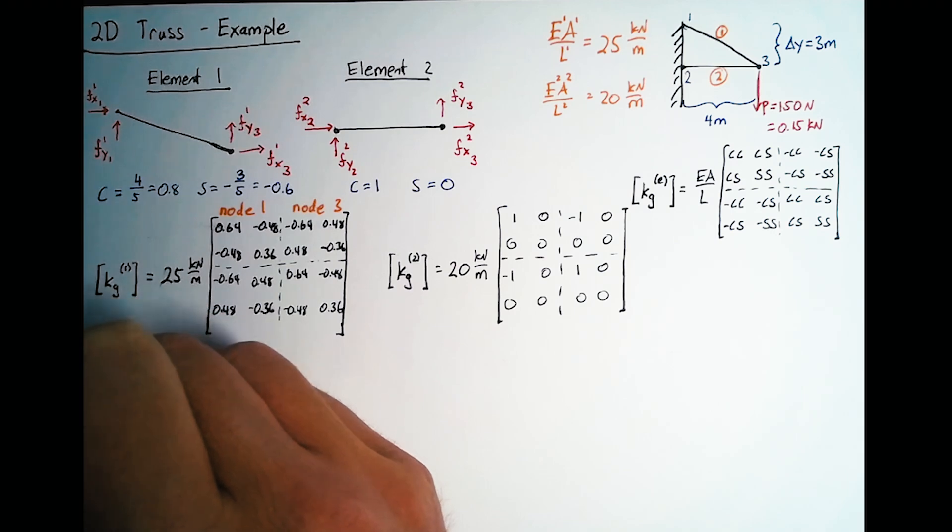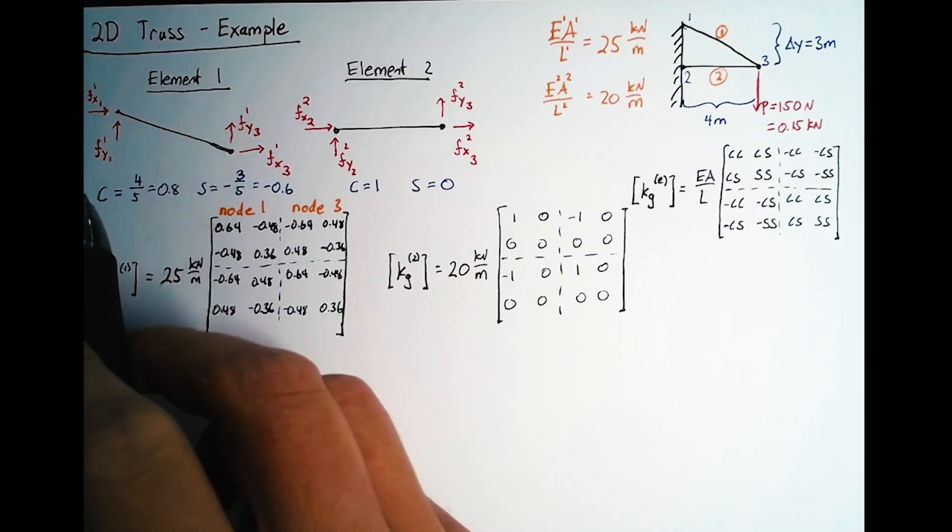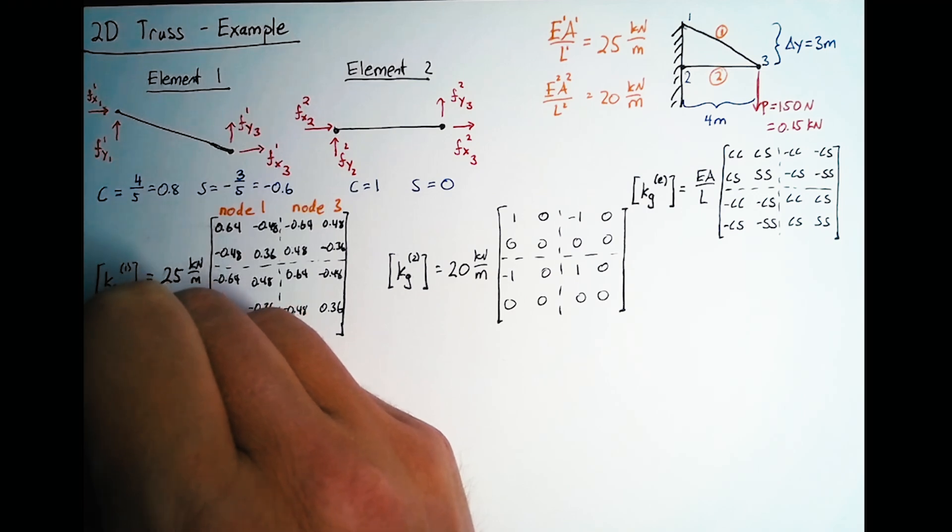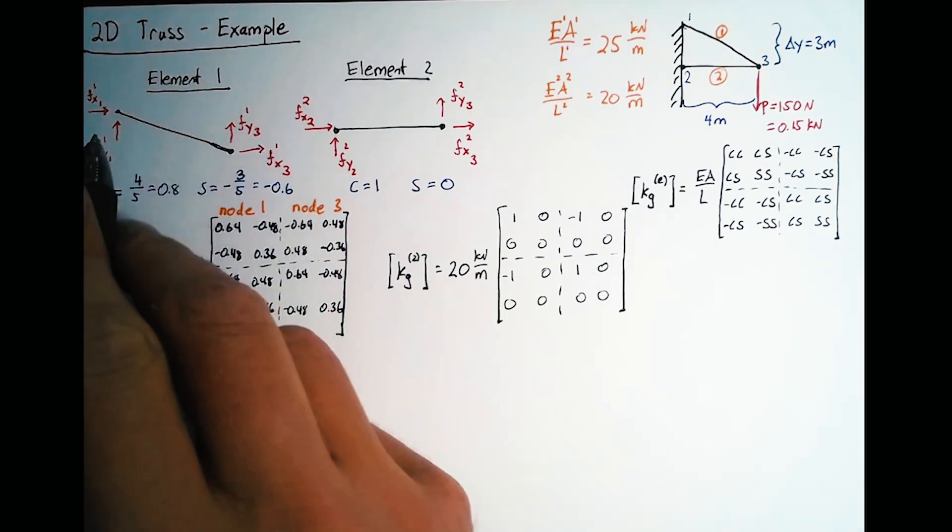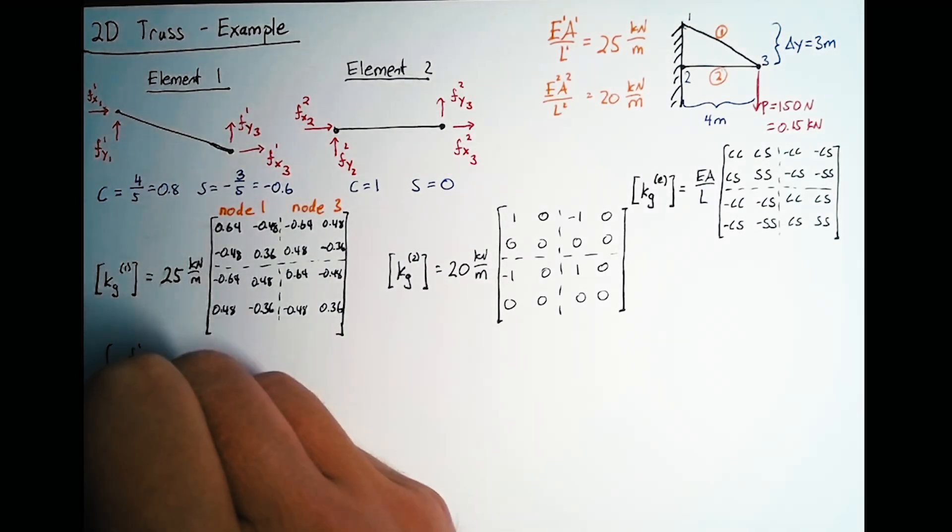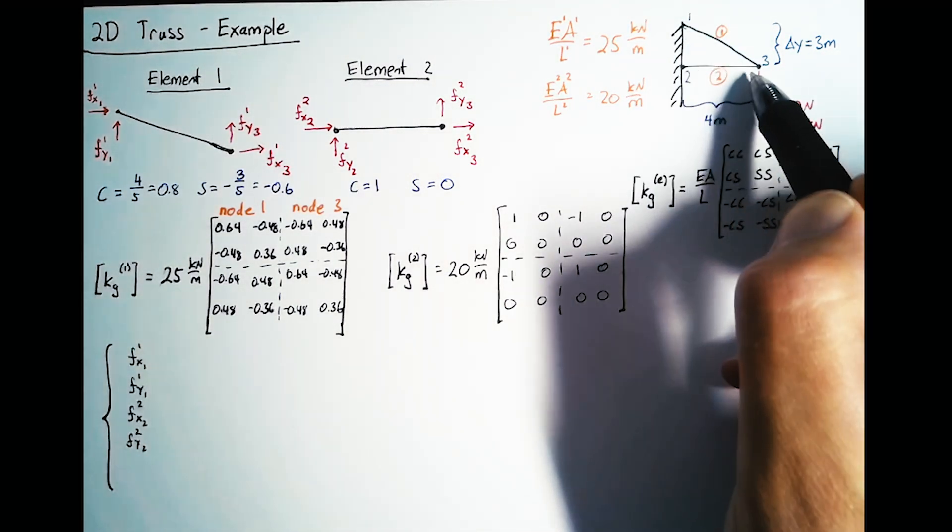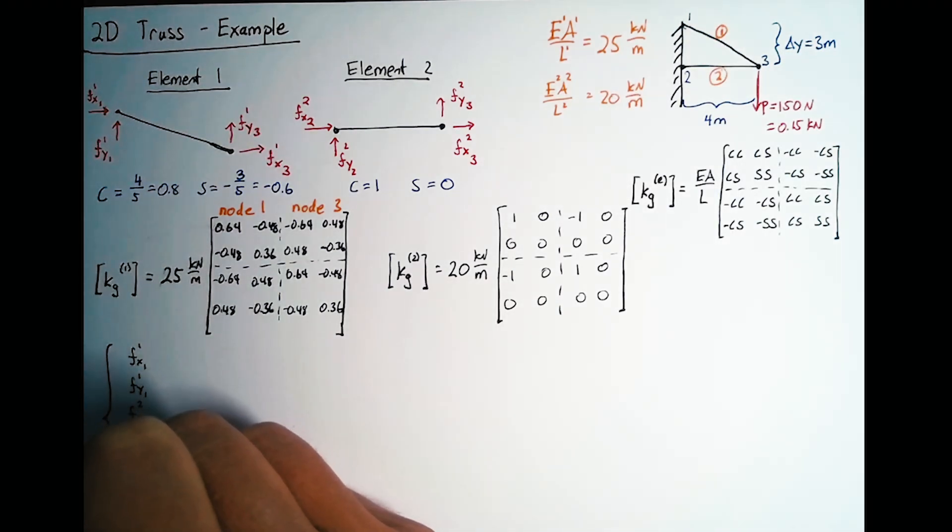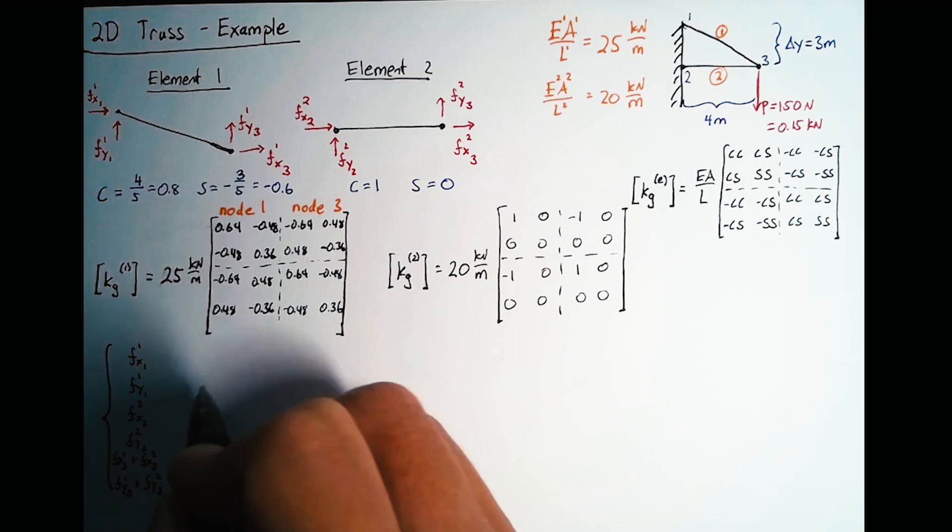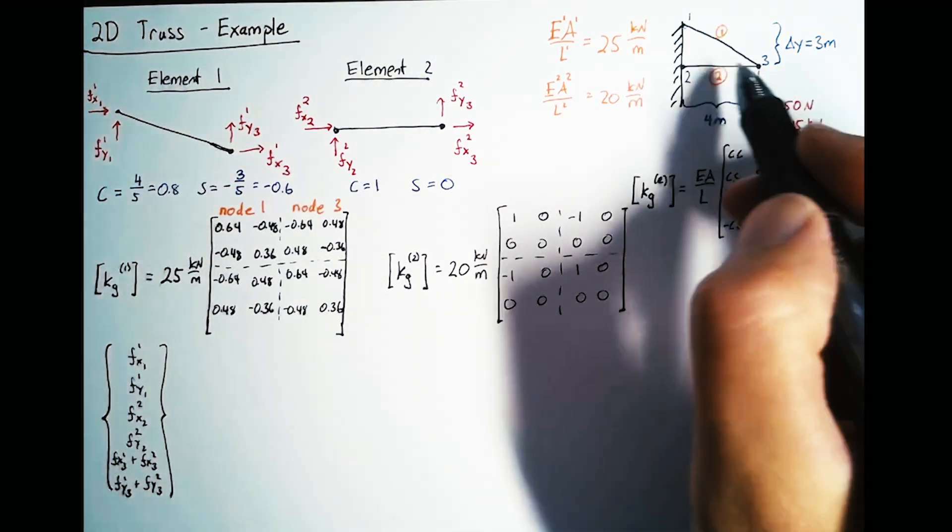We need a vector of six forces here. We're going to organize these by node: node 1, node 2, node 3, with x and y within each node. For node 1, we only have one element contributing. For node 2, again we only have one element. For node 3, there are two elements attached to it, so we have fx31 plus fx32, and fy31 plus fy32. This is summing up all of the internal forces acting on each of those nodes.